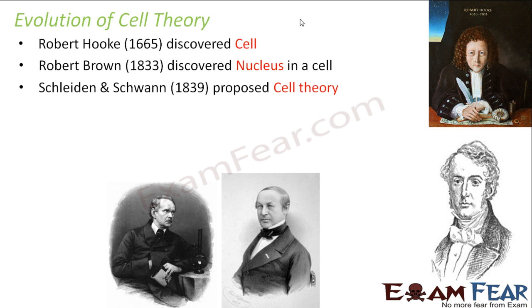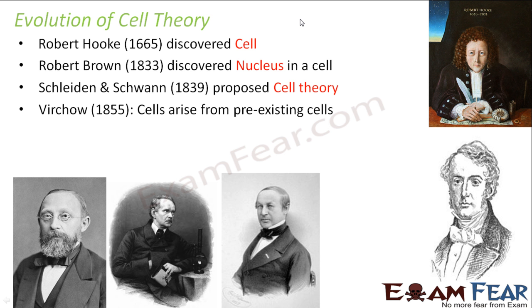Around 1839, a pair of scientists — Schleiden and Schwann — proposed the cell theory. Then around 1855, another scientist named Virchow stated that cells arise from pre-existing cells, meaning from existing cells new cells will arise, and from those new cells even newer cells arise, and this process keeps going on. So from 1665 when cell was first discovered, through the 1800s — 1833, then 1839, then 1855 — people were gradually becoming successful in understanding cells.